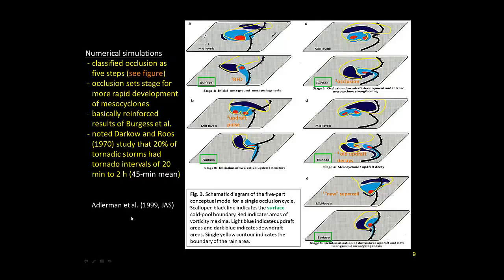After Don Burgess, quite a bit of time elapsed before people looked at this in detail. Adlerman from OU did some modeling work in 1999, doing numerical simulations and classifying occlusion as five steps. Going through this figure — for each letter you have a surface depiction and a mid-level depiction, with the surface highlighted in green. In these pictures: cyan represents updraft areas, red represents positive vertical vorticity, dark blue represents downdraft areas, yellow is the reflectivity outline, the black barbed line is the rear flank gust front, and the other is the forward flank gust front.